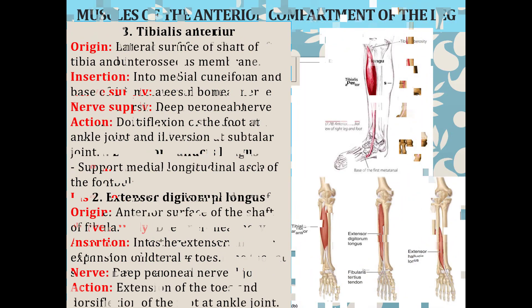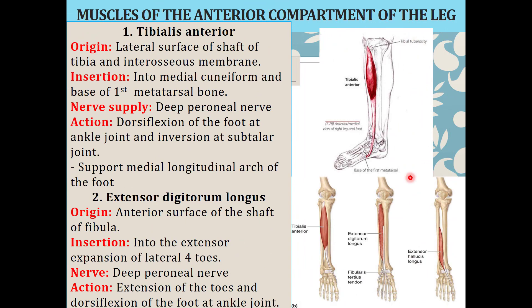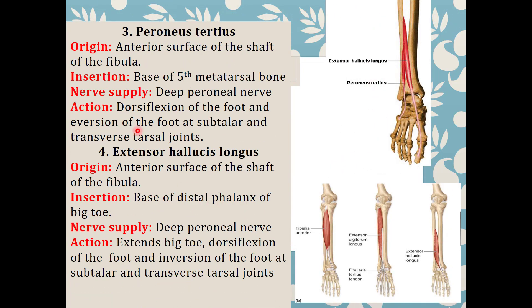In summary, we discussed five muscles: tibialis anterior, extensor digitorum longus, peroneus tertius, extensor hallucis longus, and extensor digitorum brevis, which originates from the calcaneum. Of the first four muscles, only tibialis anterior originates from the tibia; extensor digitorum longus, peroneus tertius, and extensor hallucis longus all originate from the fibula. Remember: all muscles inserted over the medial side do inversion of the foot, and all muscles inserted over the lateral side do eversion of the foot.